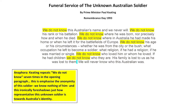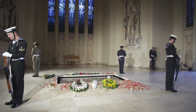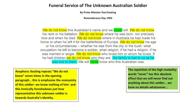Prime Minister Keating repeats 'we do not know' seven times to highlight the unknown soldier's anonymity. The inclusive plural first-person pronoun 'we' reinforces this idea that Australia does not have any detail about this unknown soldier. Ironically, this foreshadows just how important this anonymous fallen soldier is to the Australian psyche and identity. The repetition of the high modality word 'never' is absolute — that we will never find out any more details about him.